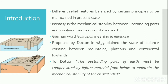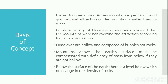Dutton wanted to explain the state of balance that exists between the mountain ranges, plateaus, and continental lowlands. According to Dutton, the upstanding parts of the earth must be compensated by a lighter rock material from below so that the crustal relief can maintain mechanical stability. Let's look into what was the basis of this concept of isostasy.